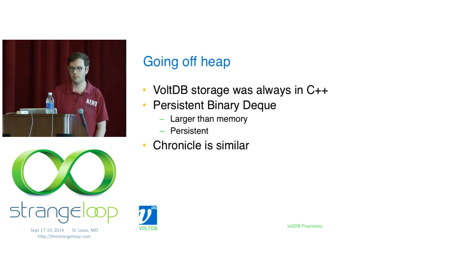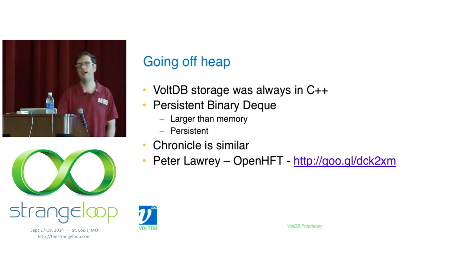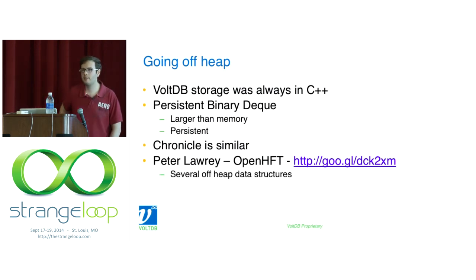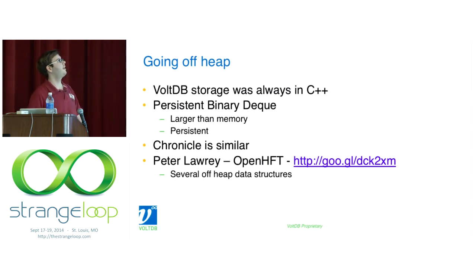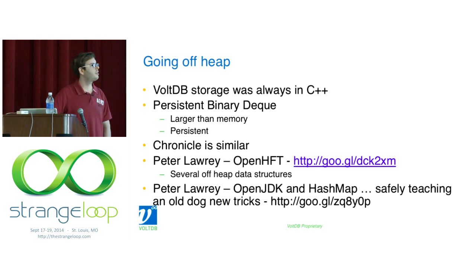There's also Chronicle, by Peter Lawrey under the OpenHFT project — similar concept, higher performance, works with smaller objects, has a concurrency strategy. If you're interested in moving things off-heap, there are several off-heap data structures available. Peter Lawrey also has a blog post showing some creative ways to create objects off the heap.